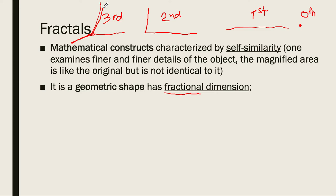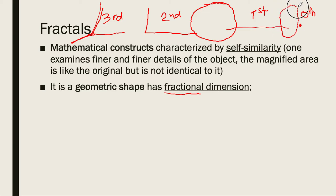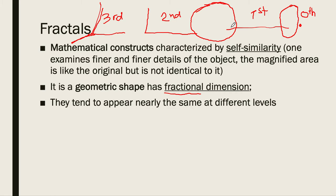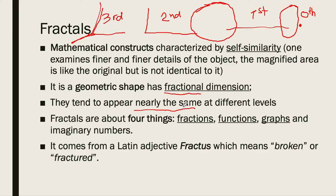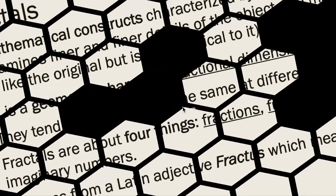Fractals, on the other hand, have a fractional dimension. Fractals live between the first and second dimension — occasionally between the zeroth and first — but mostly between the first and second dimension. They tend to appear nearly the same, or similar, at different levels as you zoom in. The word 'fractal' comes from the Latin adjective fractus, meaning broken or fractured, because its dimension is not whole.